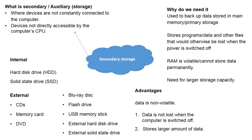We know that RAM is volatile and we can't store data forever in it, so we need some way of storing it long-term - that's where secondary storage comes in. The key advantages are that they are non-volatile, meaning we can keep data for a long time. The main characteristic is that data is not lost when the computer is switched off, and it stores large amounts of data.